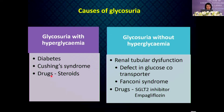Glycosuria without hyperglycaemia is due to renal tubular dysfunction, either from a defect in glucose co-transporters or Fanconi syndrome. Fanconi syndrome is a proximal tubular defect causing malabsorption of substances normally absorbed by the proximal tubule, leading to excretion of large amounts of glucose, amino acids, bicarbonate and phosphate in the urine. SGLT2 inhibitors such as empagliflozin inhibit glucose reabsorption at the proximal tubule, so a diabetic patient on this drug will develop glycosuria despite normal plasma glucose.